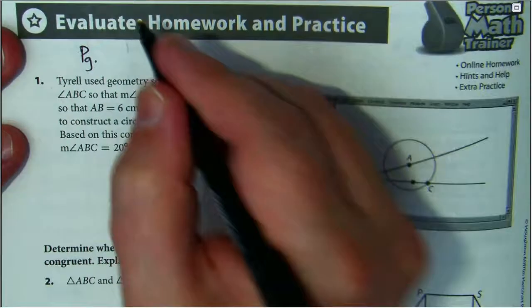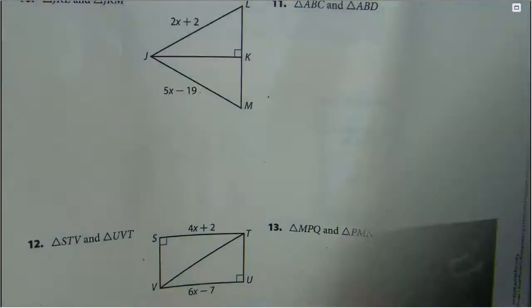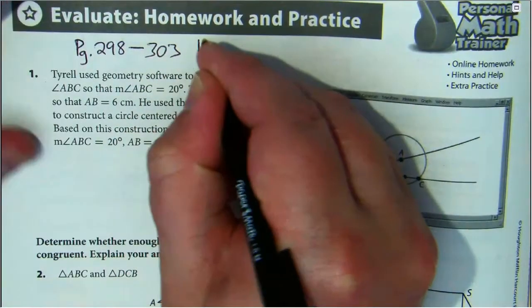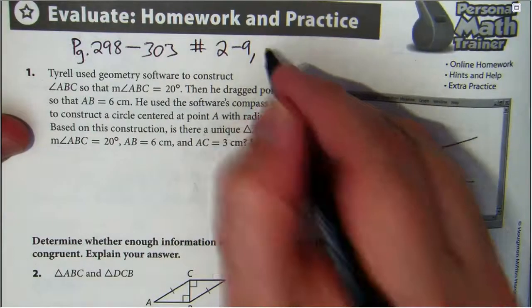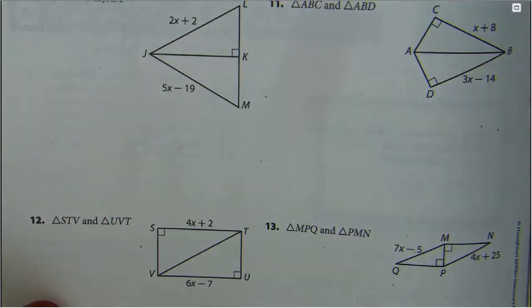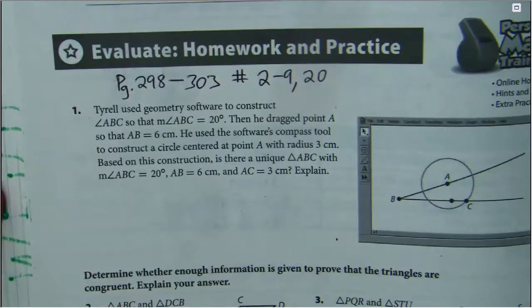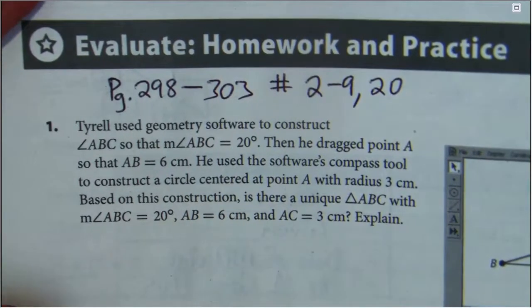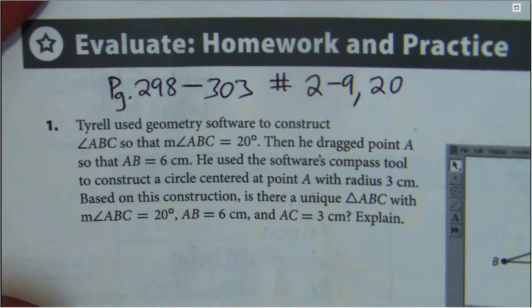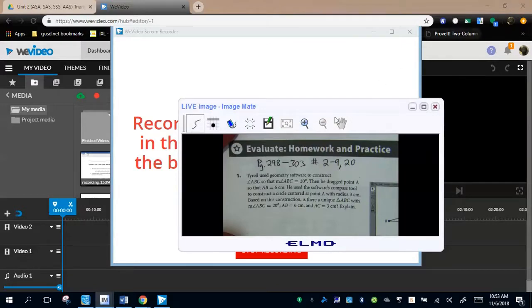All right, homework. Page 298 through page 303. There's your homework, some proofs. And I think lastly there was something involving congruency that looked really good. Okay guys, thank you. Have a beautiful day.